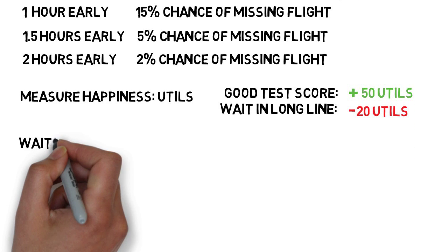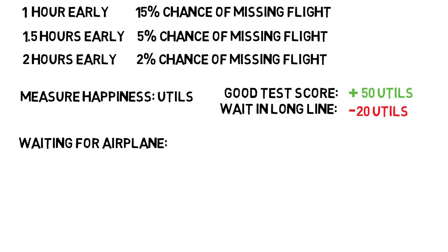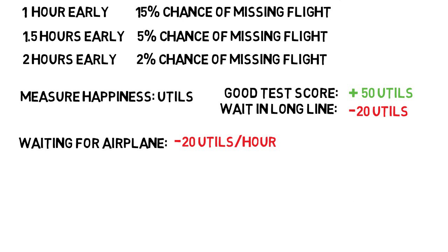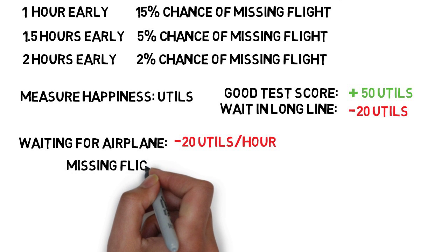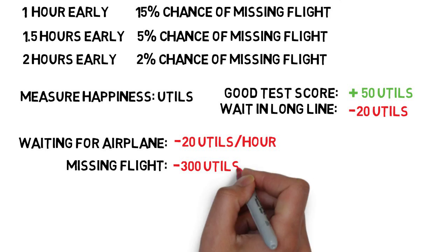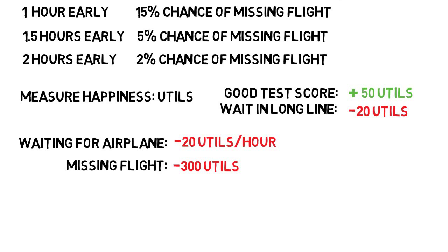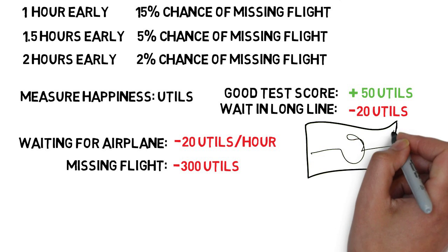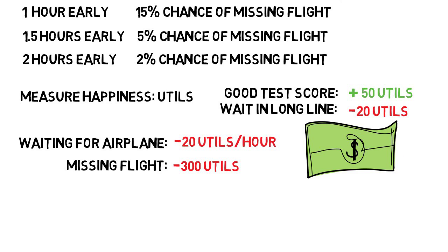So how many utils is waiting for an airplane to depart? Let's say it's minus 20 utils per hour — the more you wait, the less happy you get. How much sadness would missing your flight cause? Let's say it's minus 300 utils, or 15 times worse than waiting an hour. Hypothetically, I might pay $20 an hour to avoid waiting for a plane, and I'd have to be paid $300 to be okay with missing my flight, so long as it's not extremely crucial. That's what they're worth to me in terms of the events.